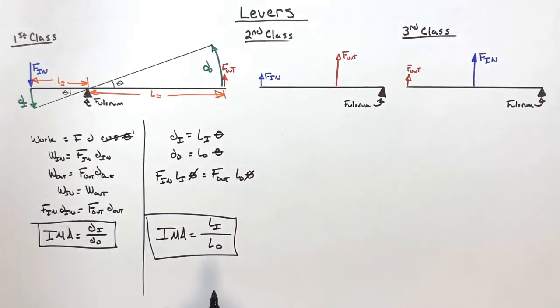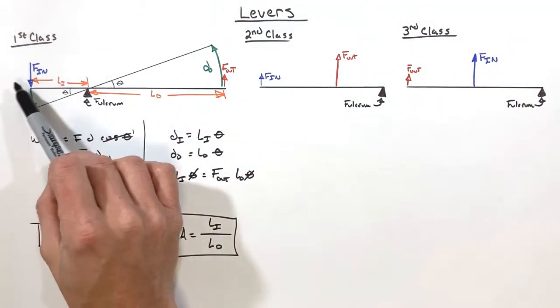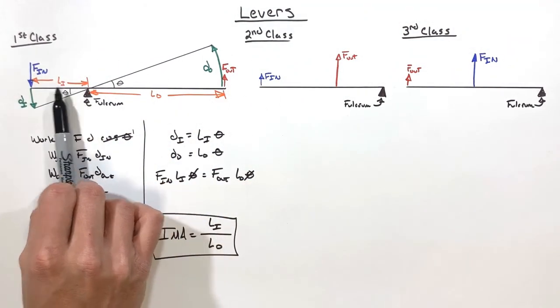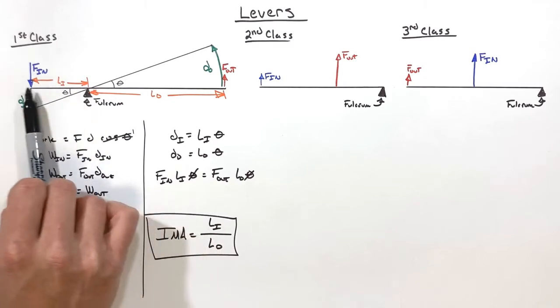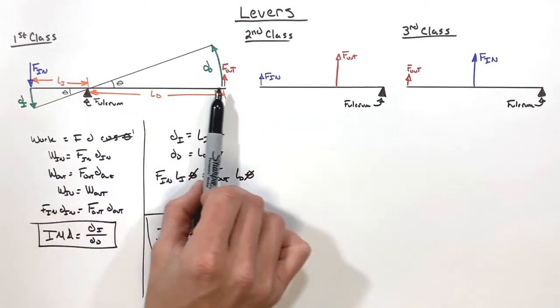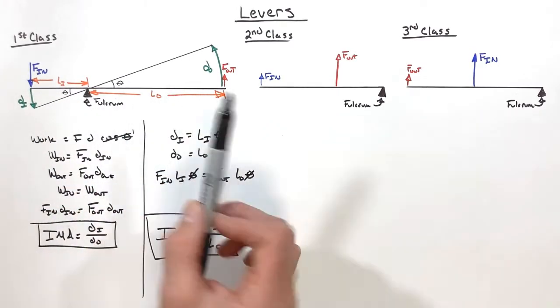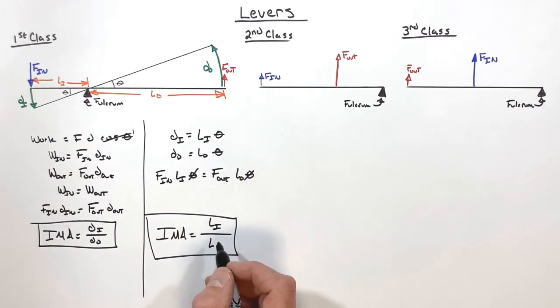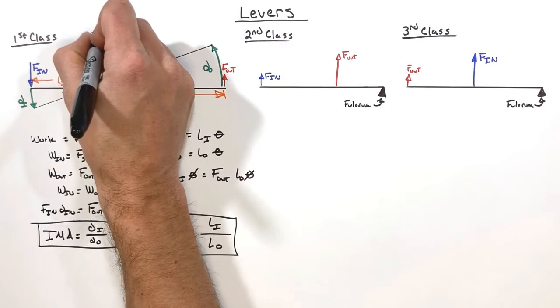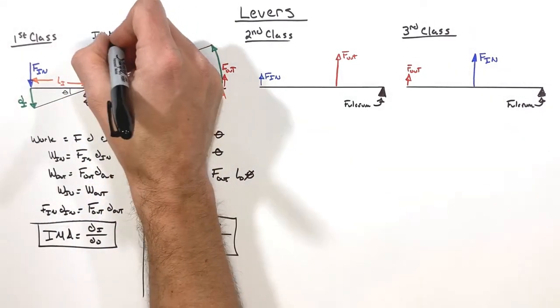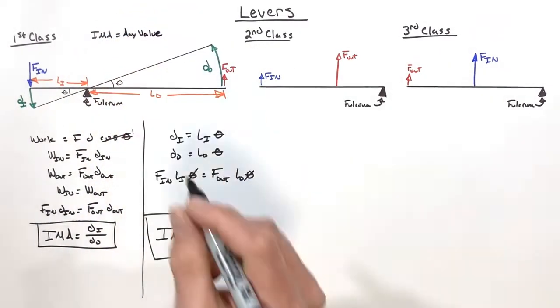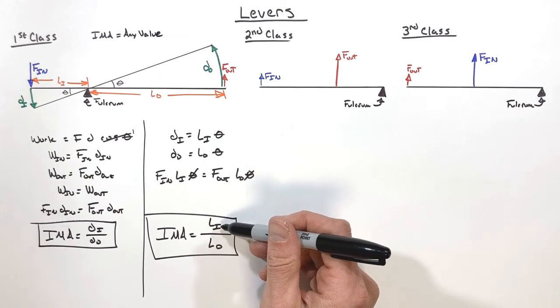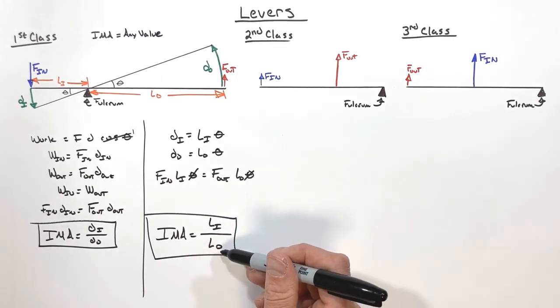And so here's the thing I want you to take away from this: on a first class lever, we can make the length of this input side as long as we want and the length of this output side as long or as small as we want. So for a first class lever, we can actually have an IMA that can be any value, because I can make L_i very very large, very very small. I can do the same thing with L_o.